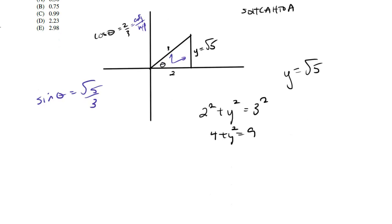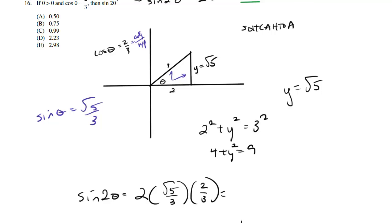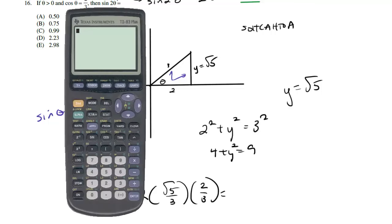So the sine of theta in this case would be square root of five over three. And now finally, we've got all the ingredients, so we can go back to sine of two theta. That's going to be equal to two times the sine of theta, which is square root of five over three, times the cosine of theta, which is two over three.